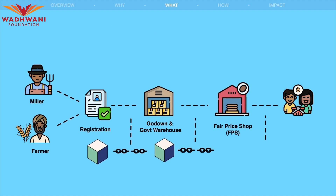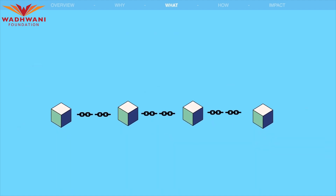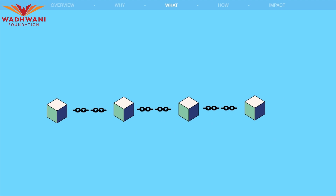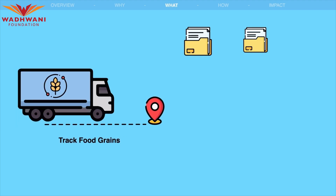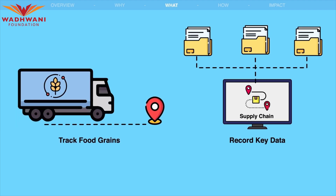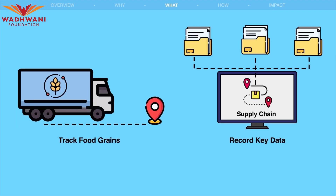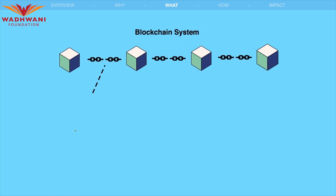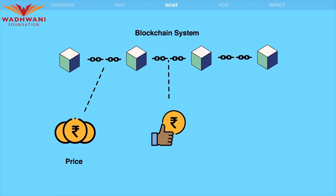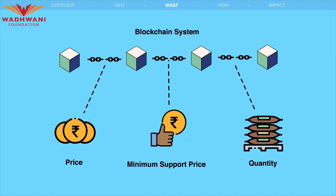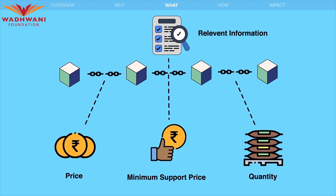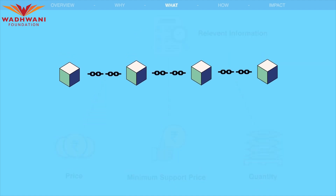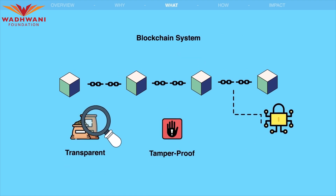The proposed solution to address these challenges is to implement blockchain technology to track food grains and record key data throughout the supply chain. The blockchain system would store data such as price, MSP, and quantity delivered at each stage.